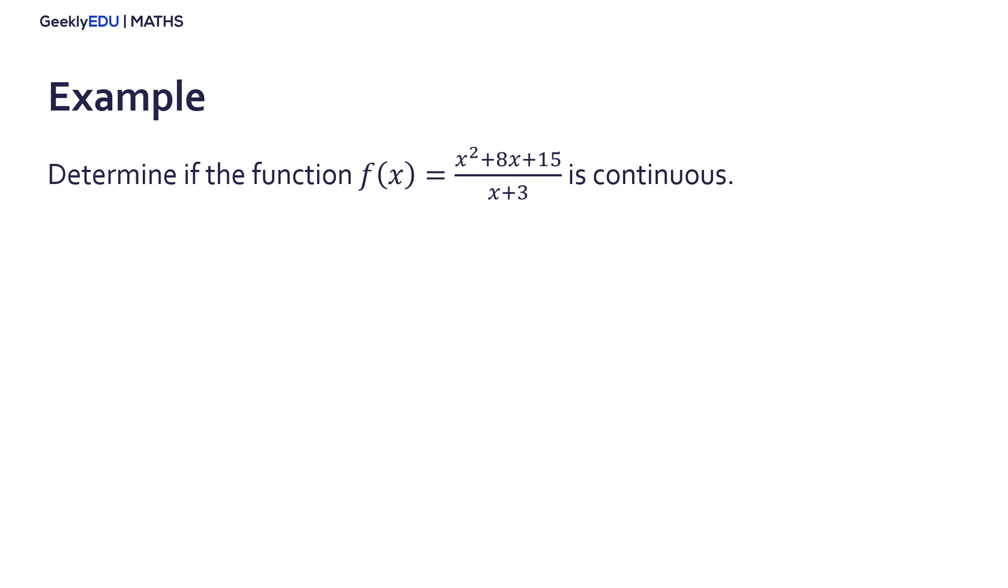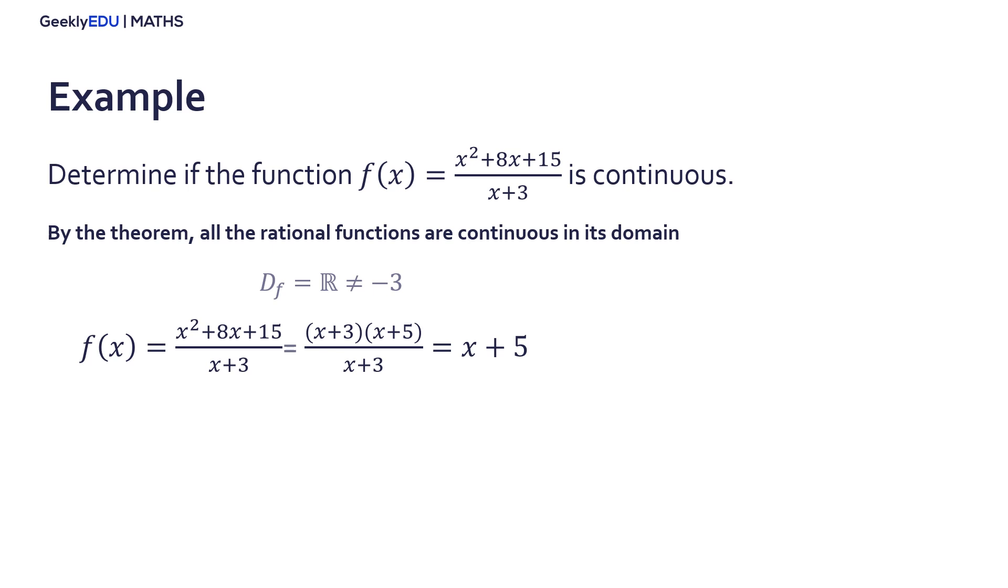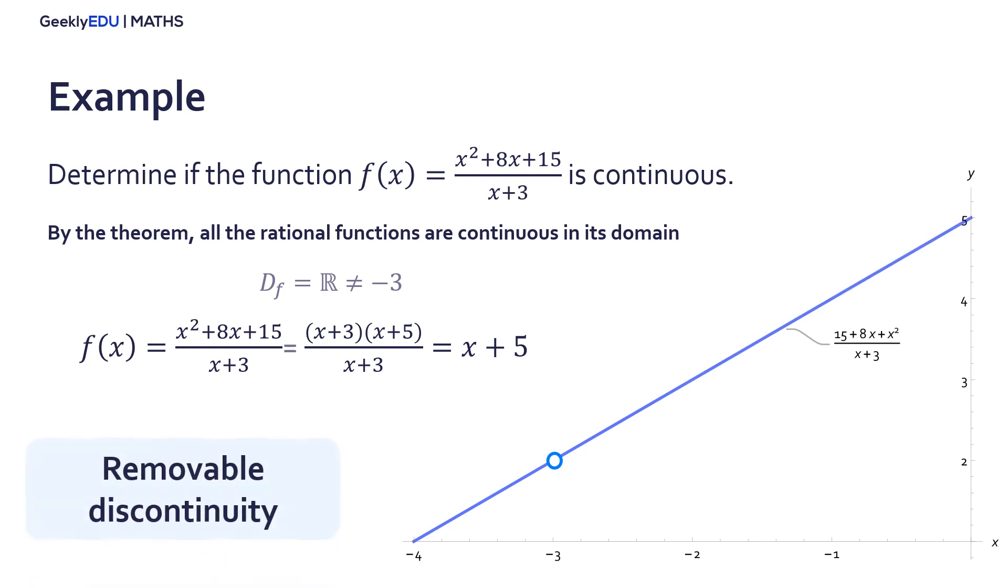The first one is to determine if this rational function is continuous. By the theorem I just gave you, we can say that this function is continuous in its domain, but what is the domain? Rational functions are defined when the denominator is different to 0. In this case, when x is equal to minus 3, the denominator is equal to 0, and the domain of the function is all real numbers different to minus 3. But as you can see, this function can be simplified, factorizing the numerator as the product of x plus 3 and x plus 5, and as one term of the numerator is the same as the denominator, we can cancel those terms and finally have the function expressed as x plus 5. This is one case of a removable discontinuity in x equal to minus 3.